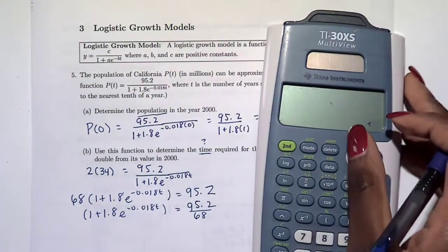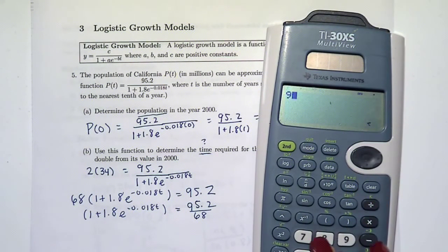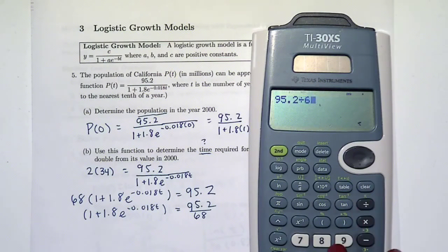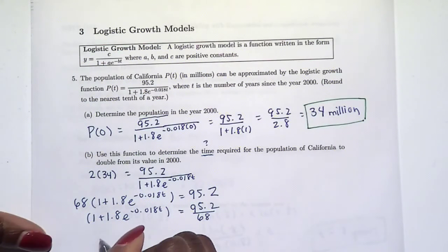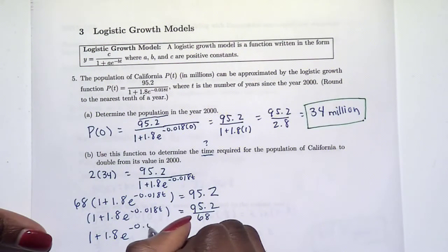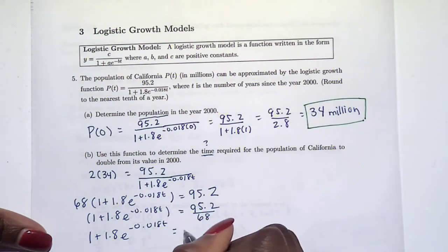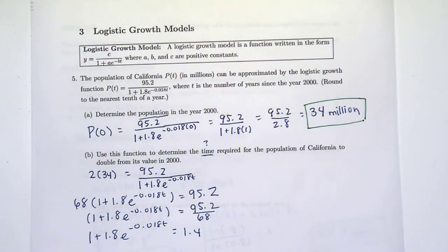Let's see if this is something nice. 95.2 divided by 68 is 1.4. I can work with that. So we have that 1 plus 1.8 times e to the negative 0.018t equals 1.4. Now what do we need to do to solve for t? We need to isolate this exponential, so first I'm going to subtract 1 from both sides.